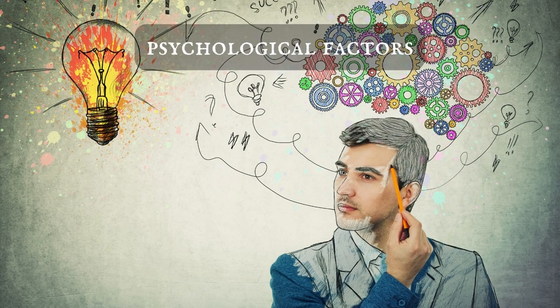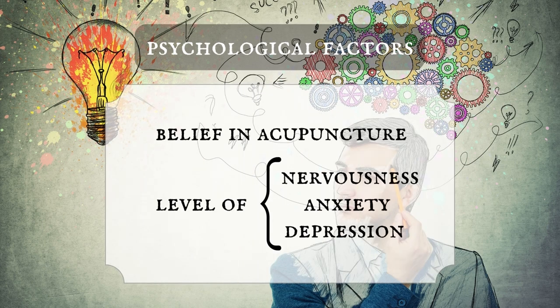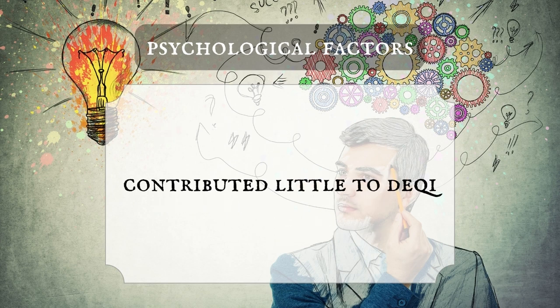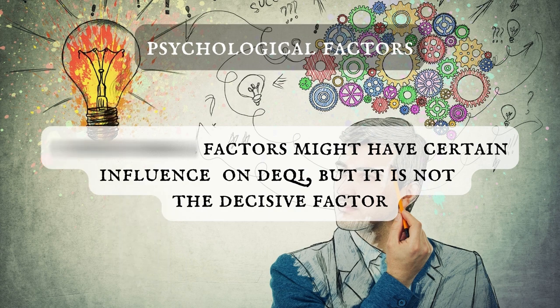And finally, psychological factors. Psychological factors of patients included belief in acupuncture. The level of nervousness, anxiety, and depression was assessed in many studies. The results show that psychological factors contributed little to De Qi, and the correlation between De Qi and therapeutic efficacy was greater than that between psychological factors and clinical efficacy. This means psychological factors might have a certain influence on De Qi, but it is not the decisive factor.